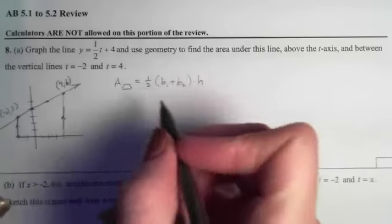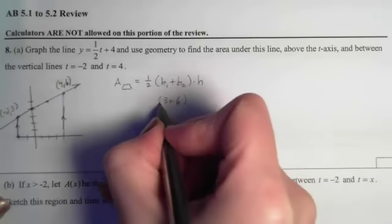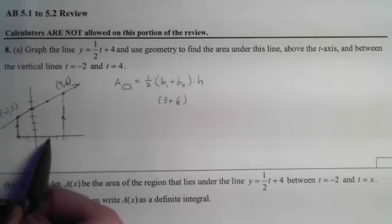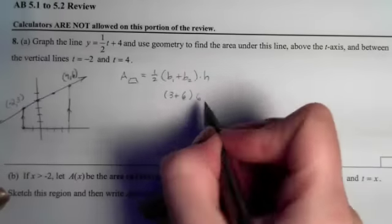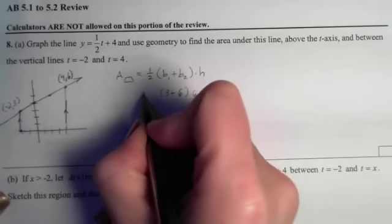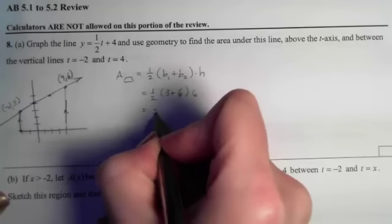My first base is 3, my second base is 6, my height is the distance between those which is going to be 2 plus 4 or 6, and then I have a half. So it looks like I get 3 times 9 which is 27.